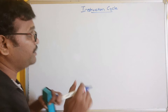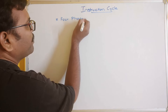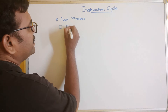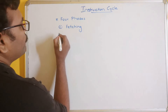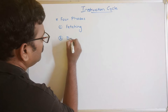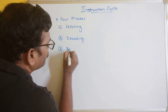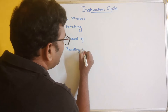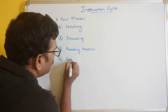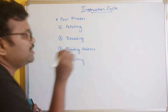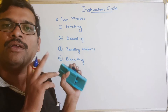The instruction cycle involves four phases. The first phase is fetching, the second is decoding, the third is reading the address, and finally executing. These are the four different phases involved while executing a single instruction.